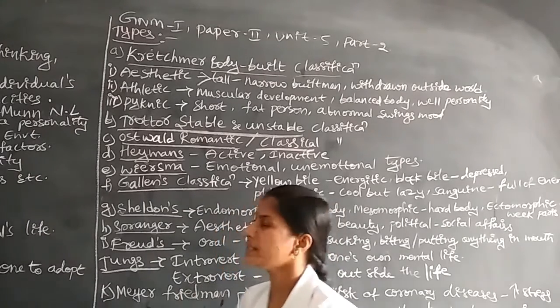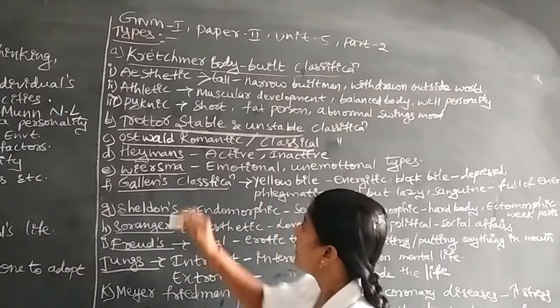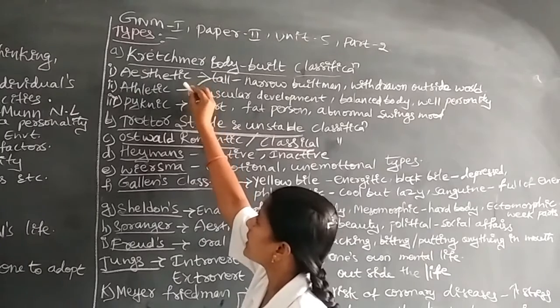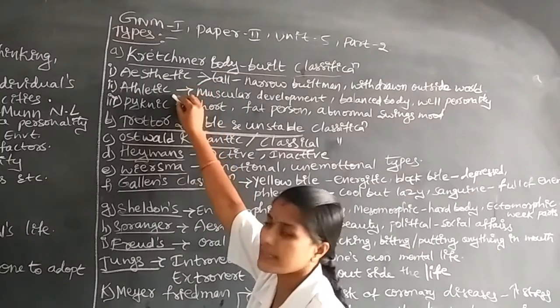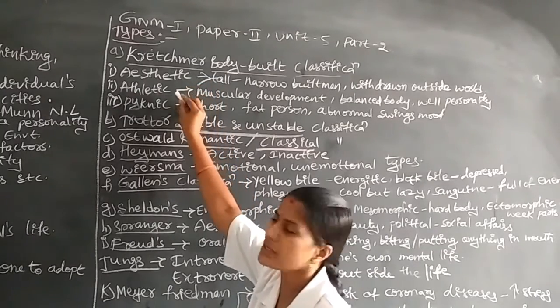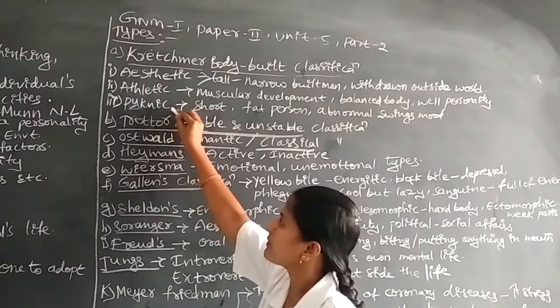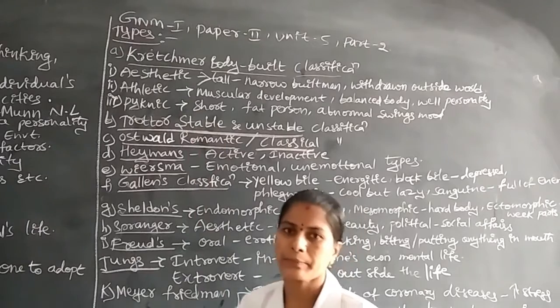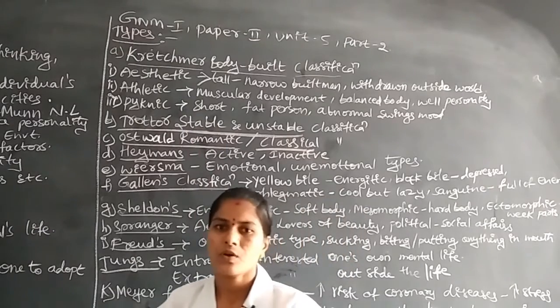The three types are: the asthenic personality, the athletic personality, and the pyknic personality.